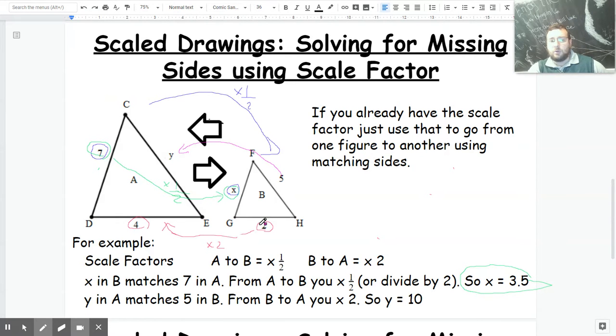I already know that to go from B to A, I have to multiply times 2. So that means instead of 5, this picture would probably be what? A 10, because 5 times 2 is 10.